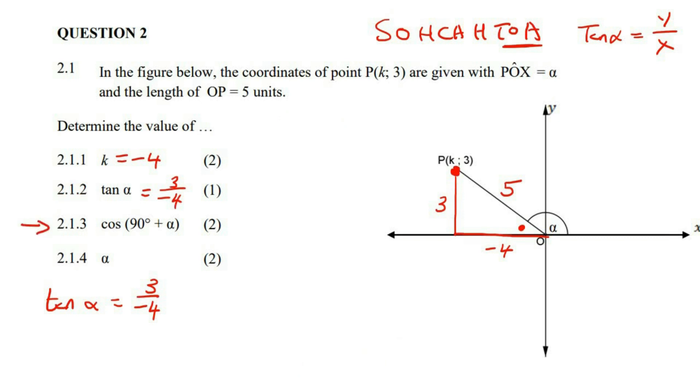Now when you get something like this, just think of your four co-functions. We know that sin of 90 minus alpha is cos. Cos of 90 minus alpha is sin. Sin of 90 plus alpha is cos. And cos of 90 plus alpha is negative sin.